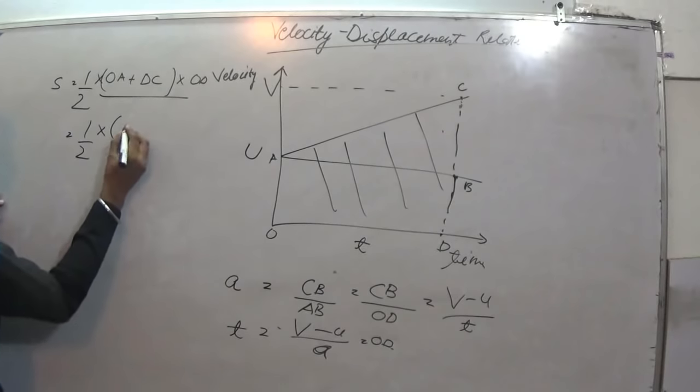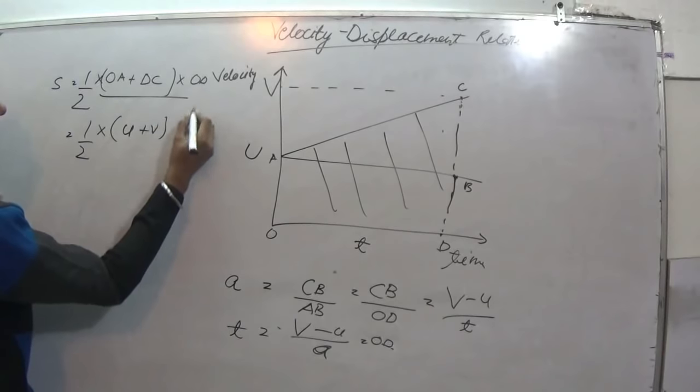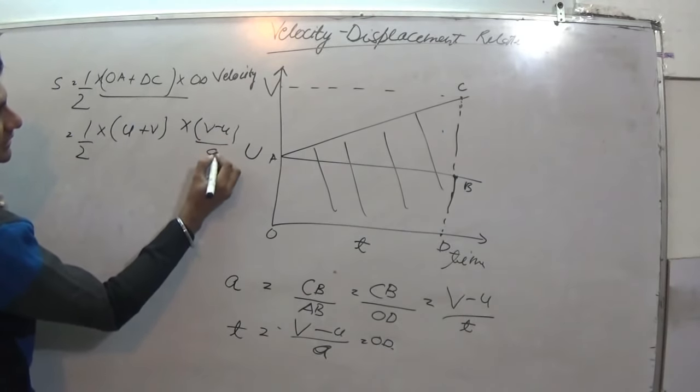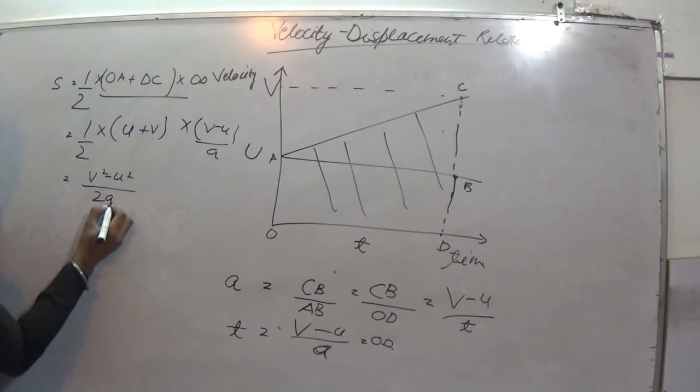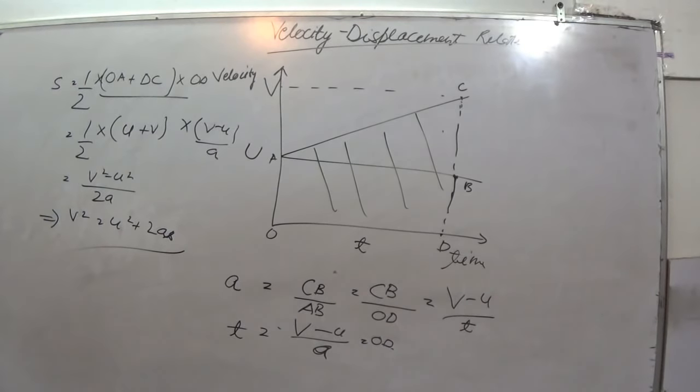What will happen? Half multiplied by, what is OA? u. What is DC? v. Multiplied by what is OD? v minus u upon a. It becomes v square minus u square upon 2a, implies v square is equal to u square plus 2as. This is how we derive.